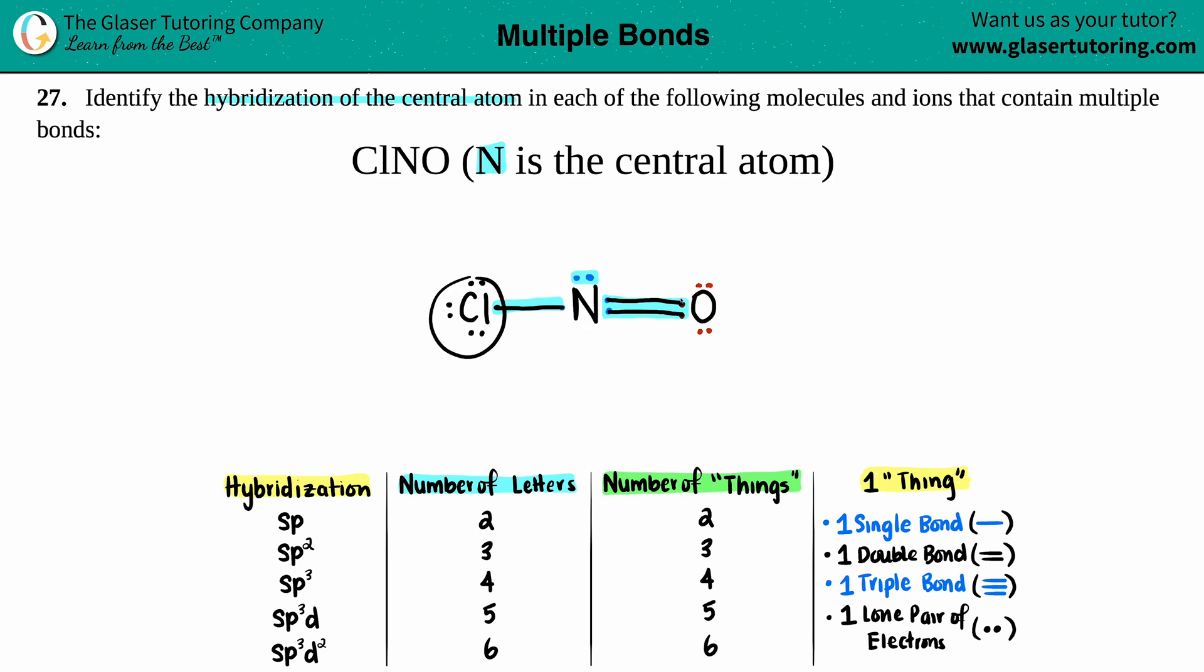I don't see anything else - I can't count these lone electrons because that's not on nitrogen. This one's got three things, and you say three things, three letters - that is sp². The nitrogen would be sp² hybridized.